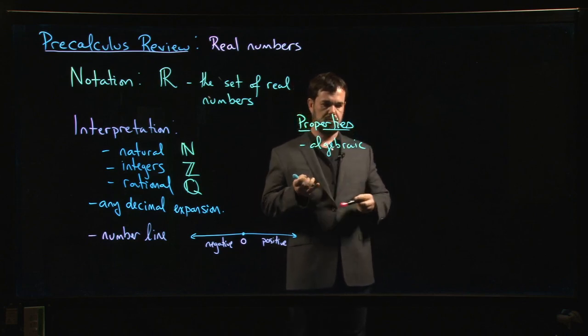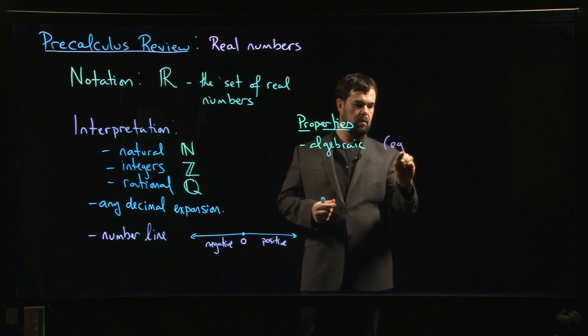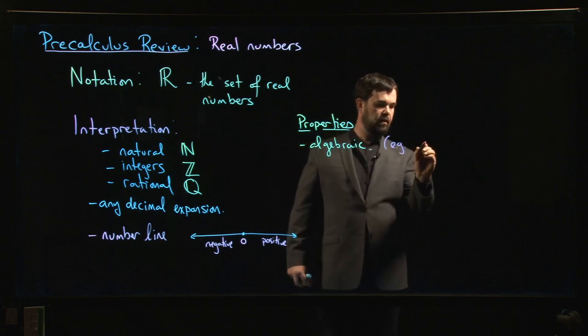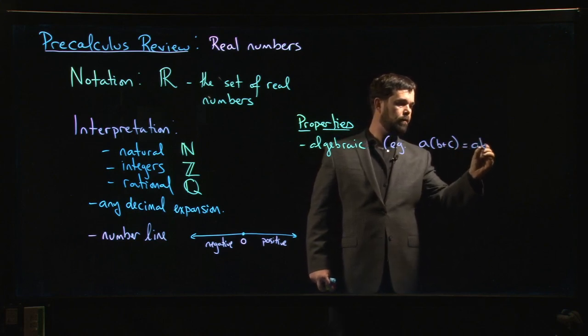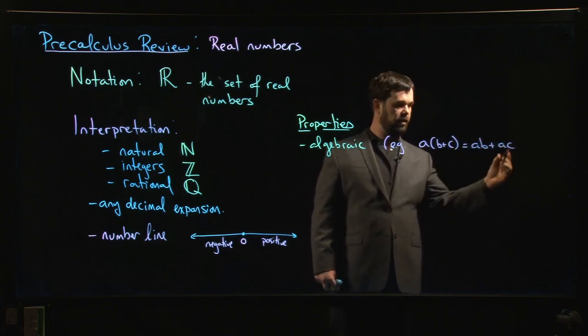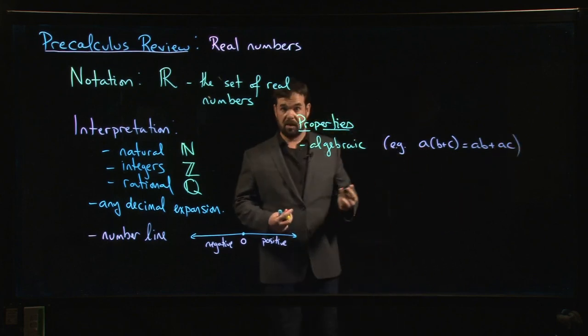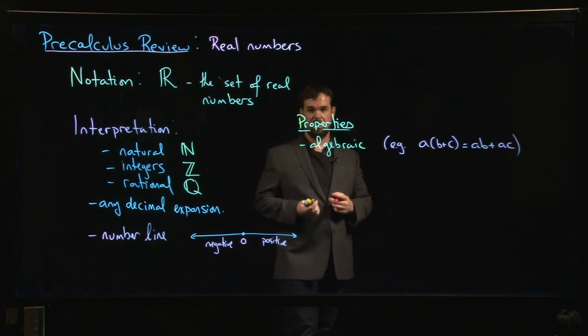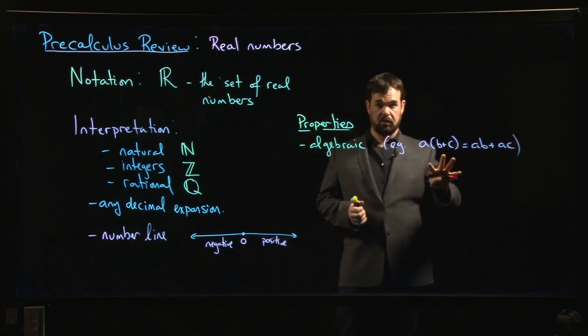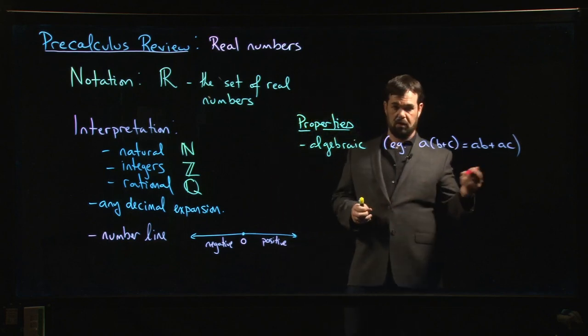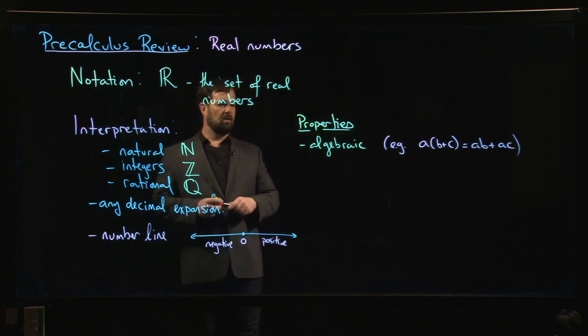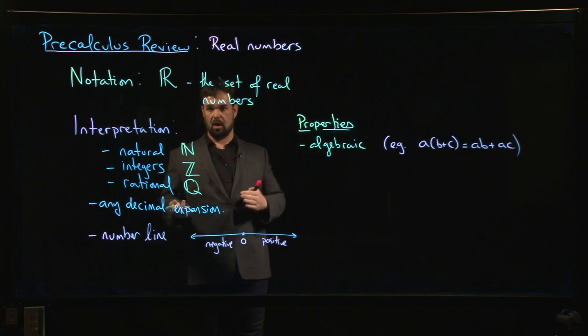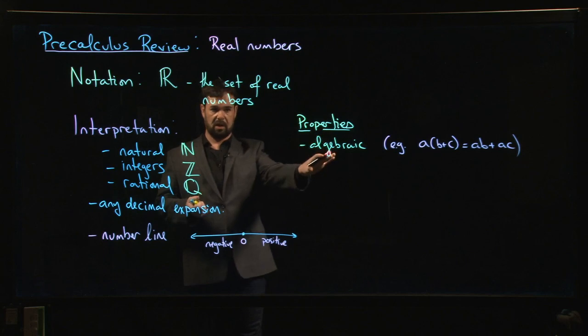The distributive property. So as an example, we would have the fact that if you do A times B plus C, that's the same thing as AB plus AC. That's known as the distributive property. It's key to doing things like factoring and multiplying out polynomials. The FOIL rule that you probably know comes from this distributive property. So there are all these algebraic properties telling you how to manipulate real numbers, how to solve equations.